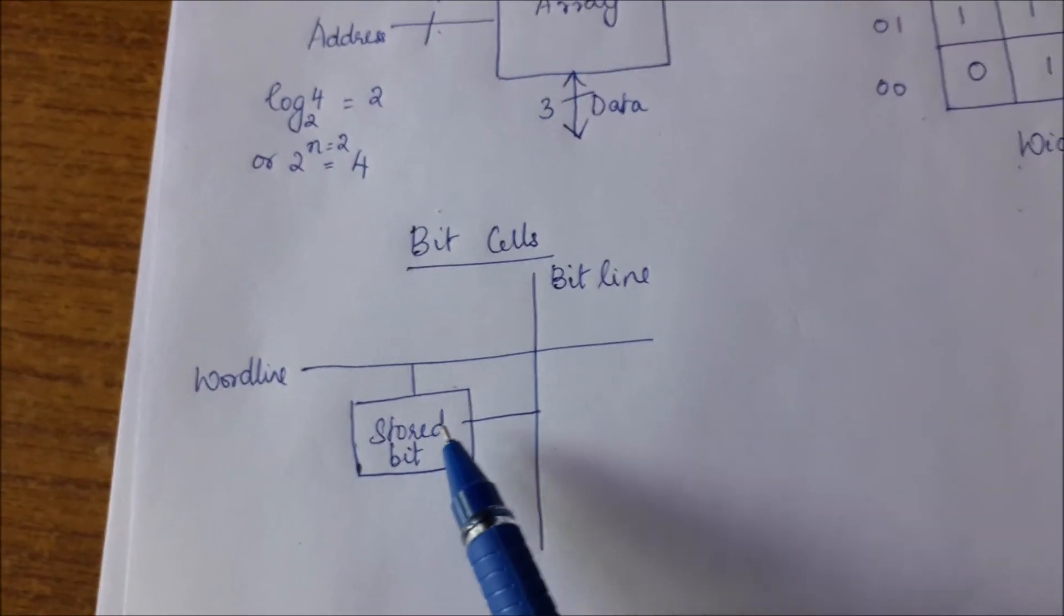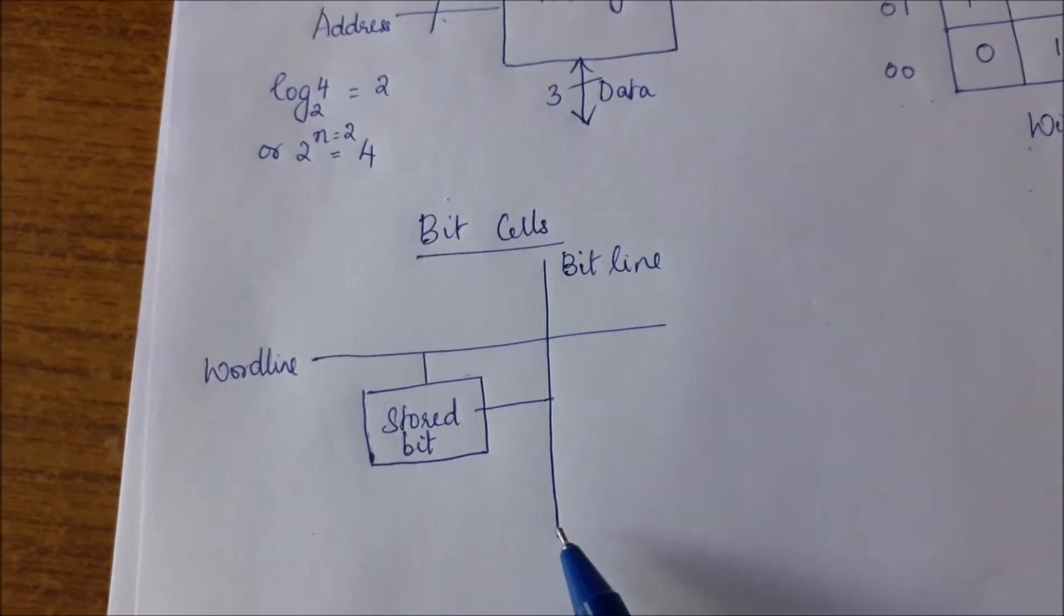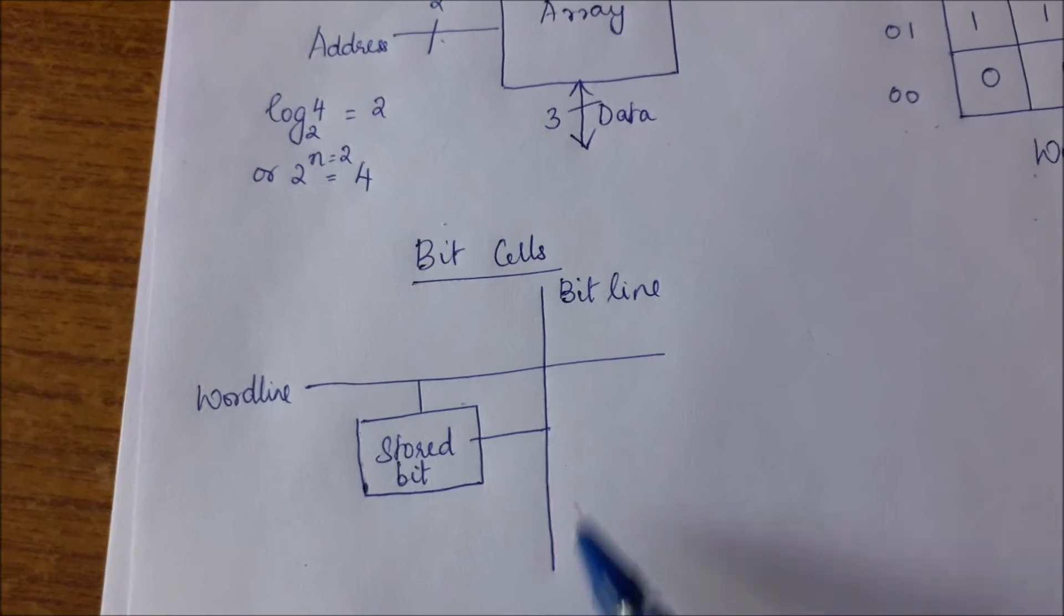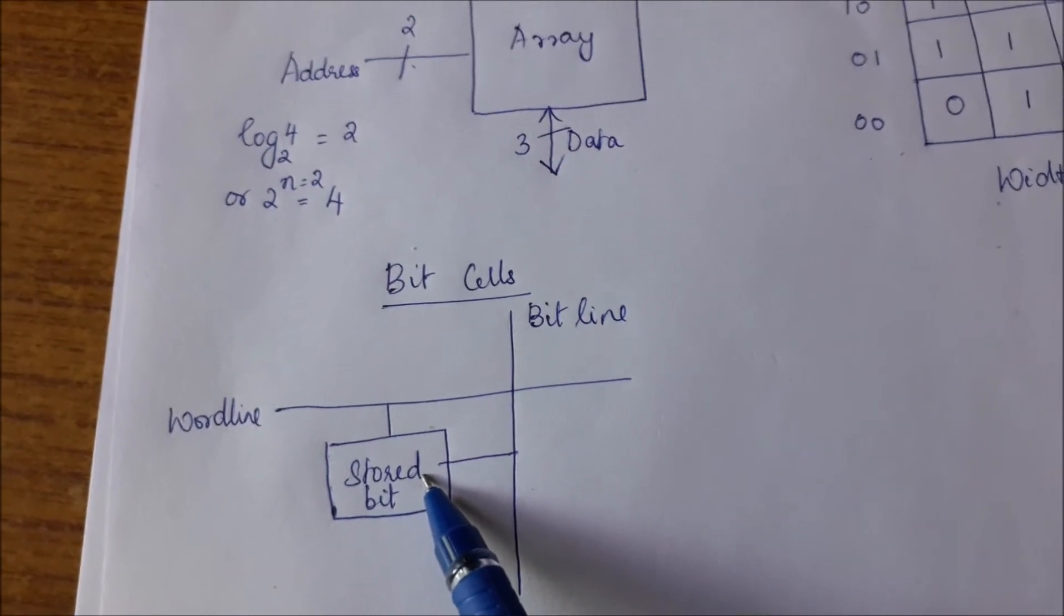Whatever is there inside this, if it is a read operation, will appear on the bit line. If it is a write operation, whatever is there on the bit line will get written into the bit cell. This is basically how a memory works.